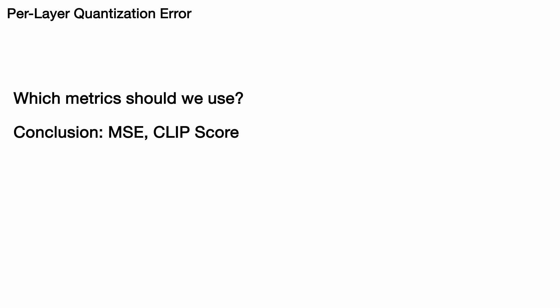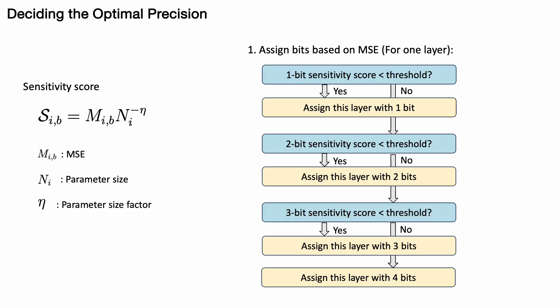After the analysis, we will use both MSE and clip score drop as our metrics to decide the mixed precision recipe. We initially use MSE to calculate the sensitivity score. Beyond just considering the MSE, we also take into account the parameter size of each layer. This approach is adopted because our goal is to quantize layers that not only exhibit minimal quantization error, but also have a larger parameter size. By doing this, we aim to reduce the overall bit usage as much as possible while maintaining high performance.